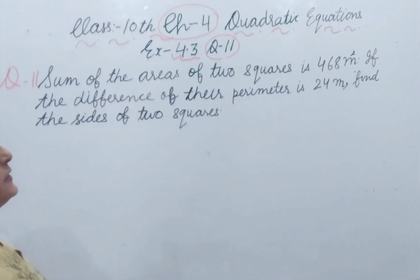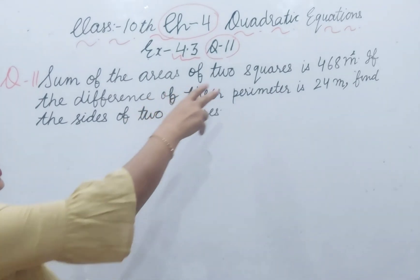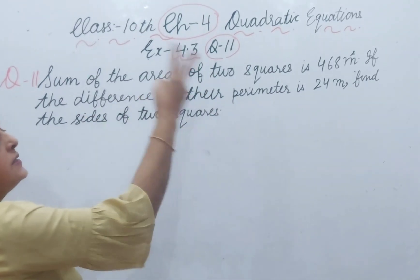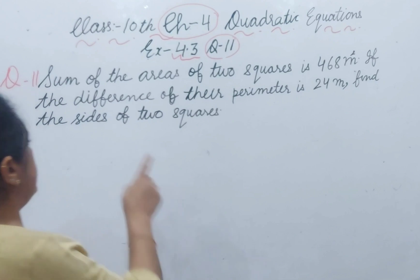Sum of the area of two squares is 468 meter square. Two square ka jo area hai unka sum 468 meter square hai.